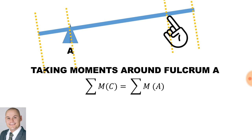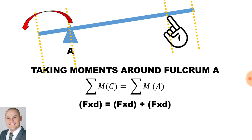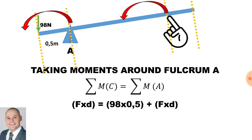The sum of moments clockwise must be equal to the sum of moments anticlockwise. To calculate the moment, it will be force multiplied by distance. For the anticlockwise moments, we have 98 newtons multiplied by the distance of 0.5 meters, and the unknown force of B — which we will refer to as Fulcrum B — multiplied by the distance of 2 meters.